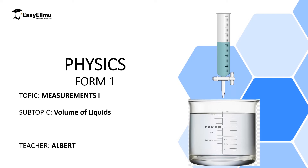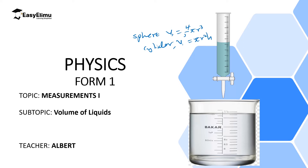Hello students, welcome to Easy Limo Learning Simplified. In the previous lessons we discussed how to calculate the volume of regular shaped solids like spheres and cylinders. We found that we can calculate their volume using specific formulas: volume of a sphere is 4/3 π r³, and volume of a cylinder is π r² h.